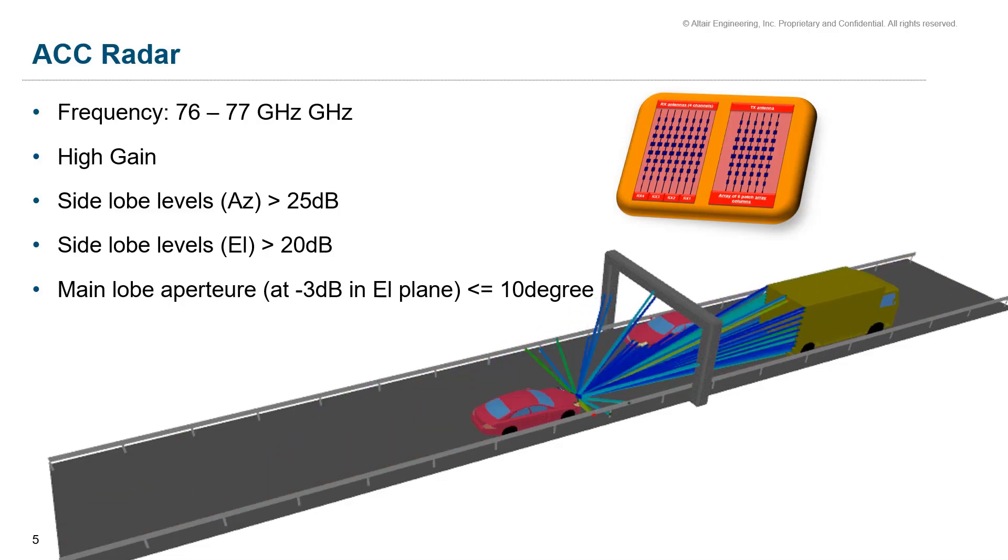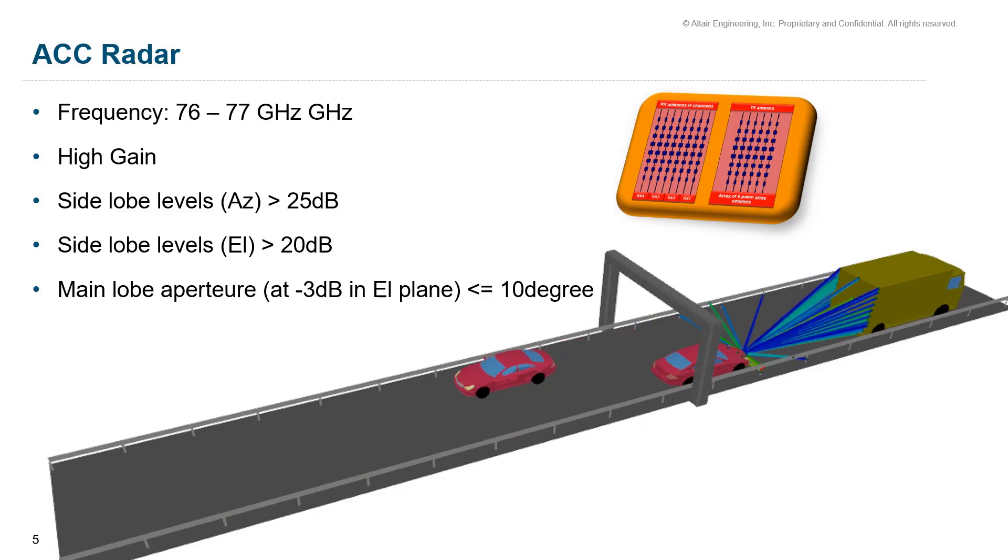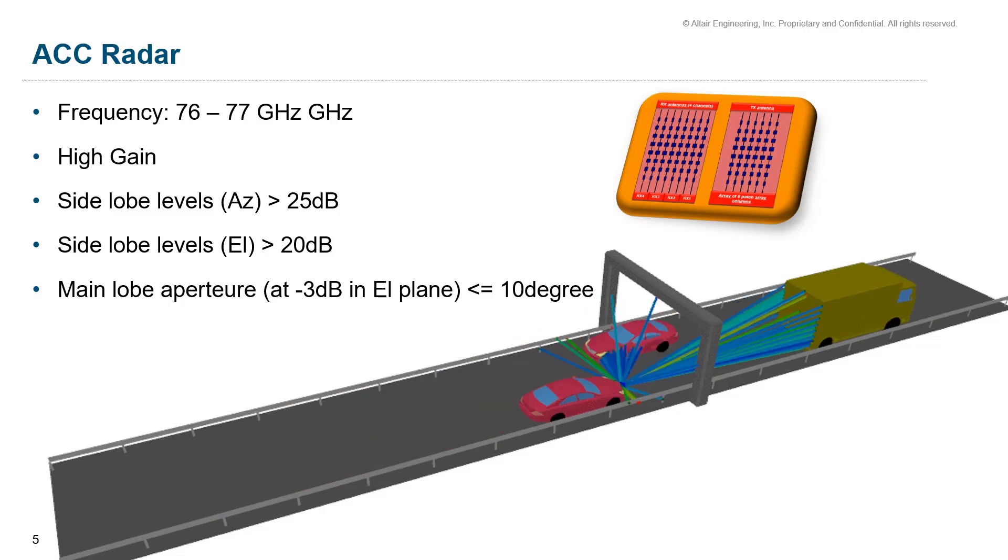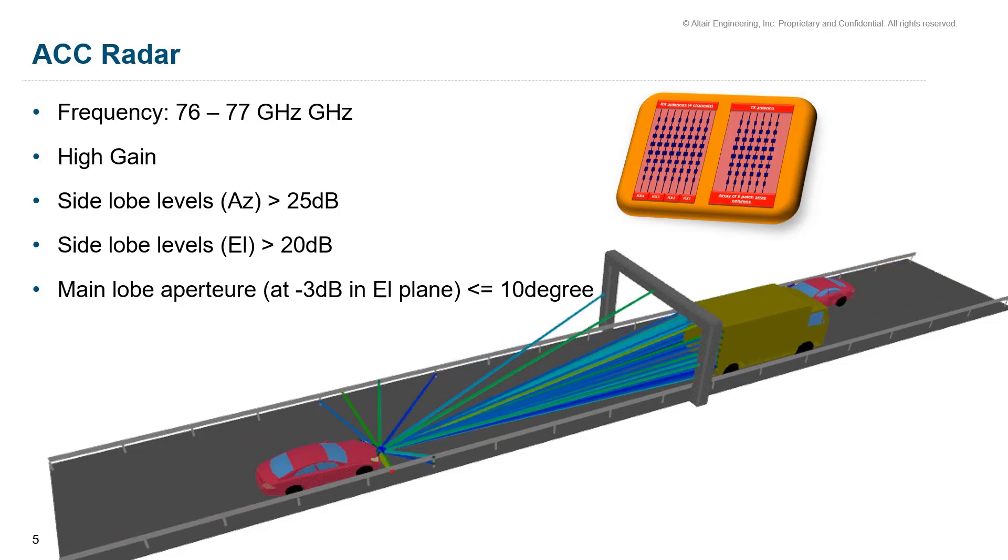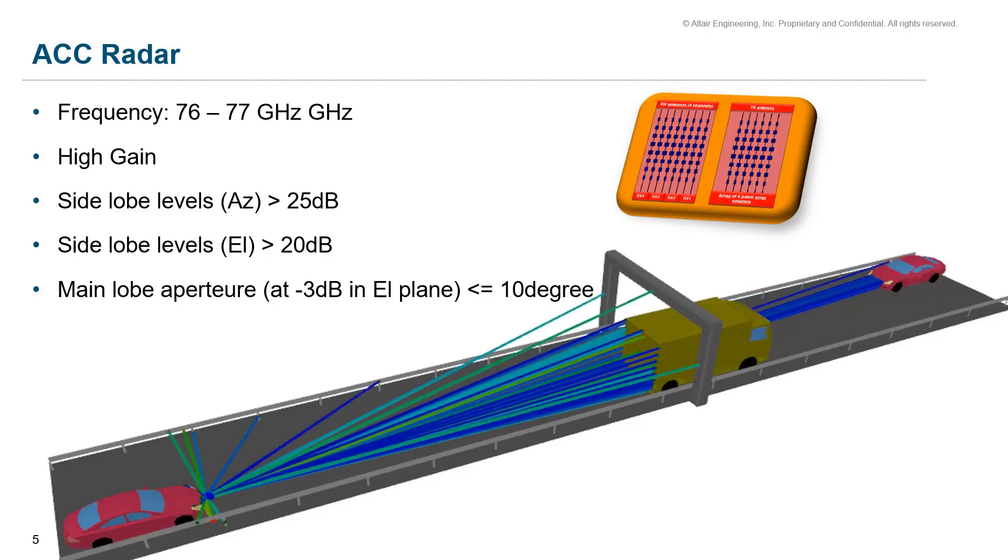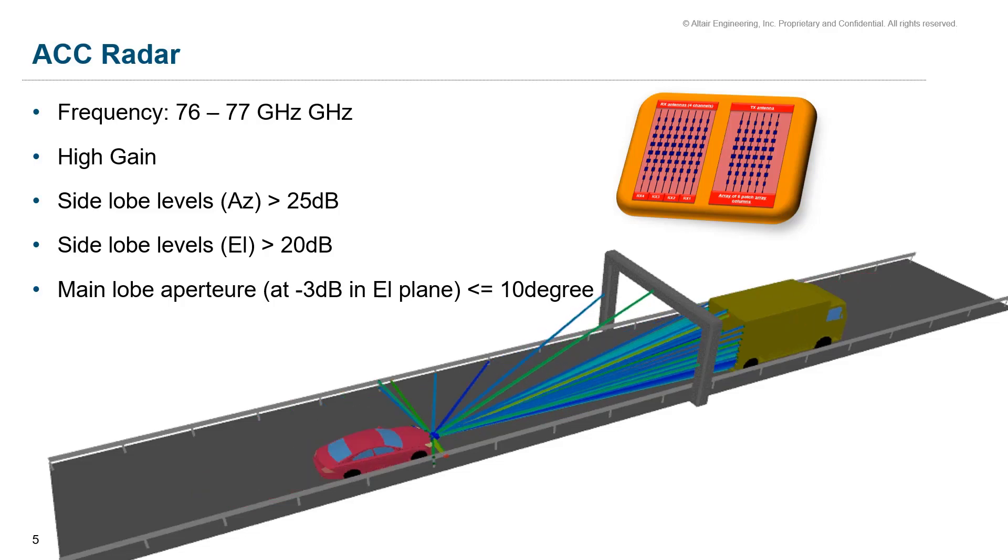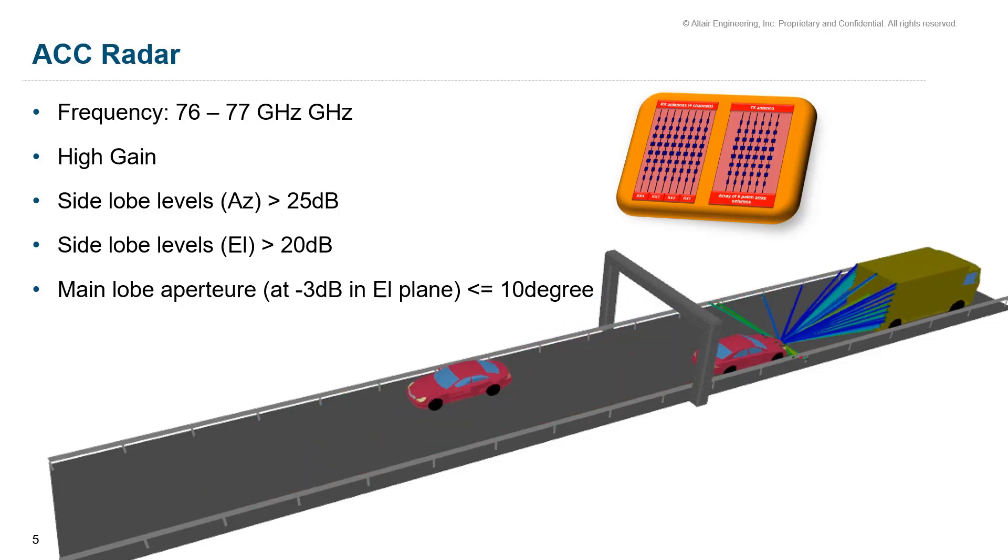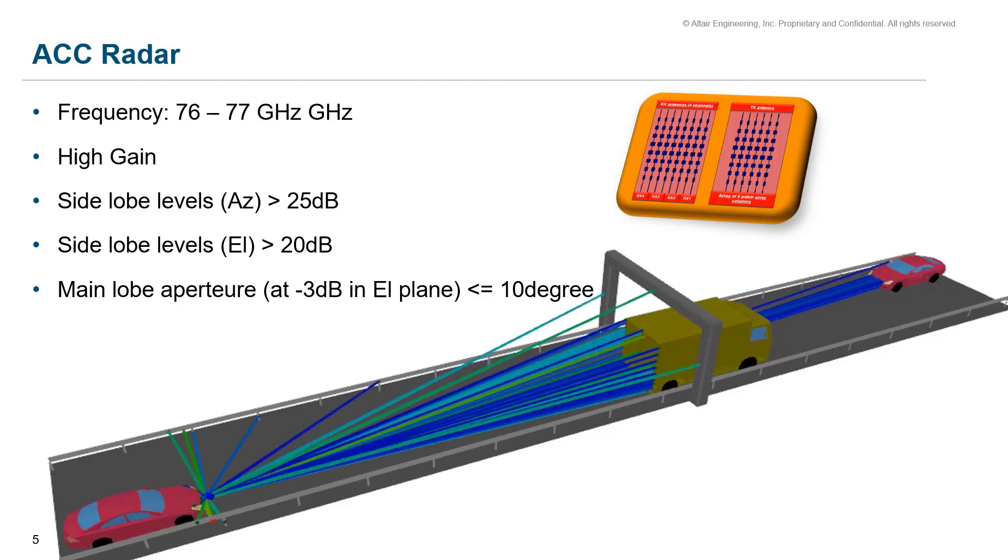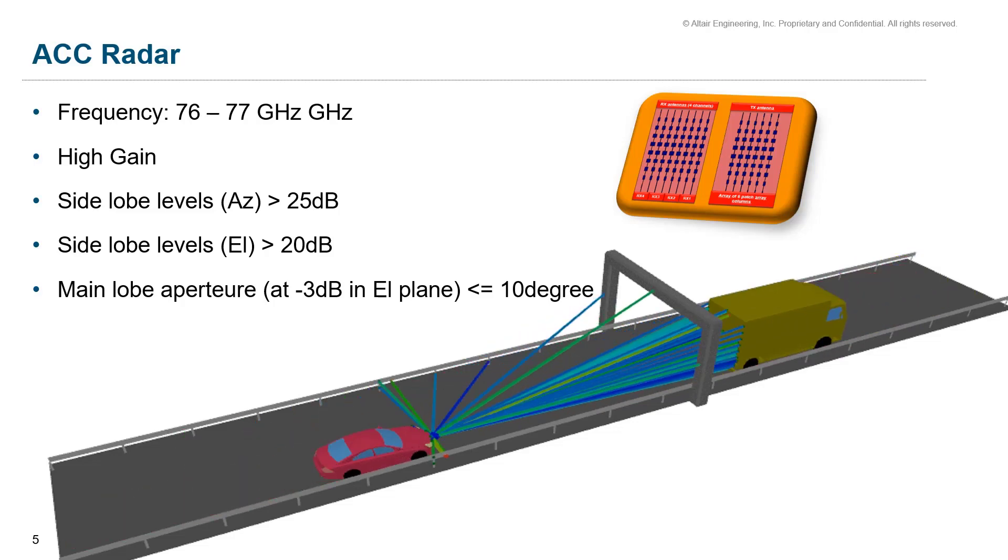For a medium range radar, one transmitter at 76 to 77 gigahertz is considered in this study. The antenna side lobes required must be less or equal to 20 dB in the elevation plane to avoid ground clutter or fixed obstacle detection, for example bridges, and the main lobes aperture at minus 3 dB in the same plane that is the elevation plane should be less than 10 degrees.